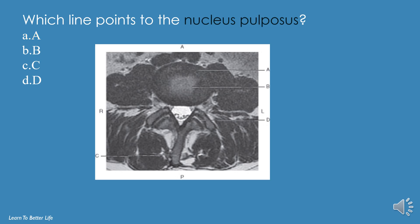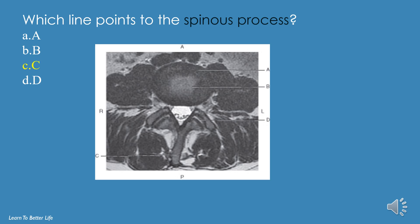Which line points to the nucleus pulposus? A, B, C, or D? The answer is B. Which line points to the spinous process? A, B, C, or D? The answer is C.